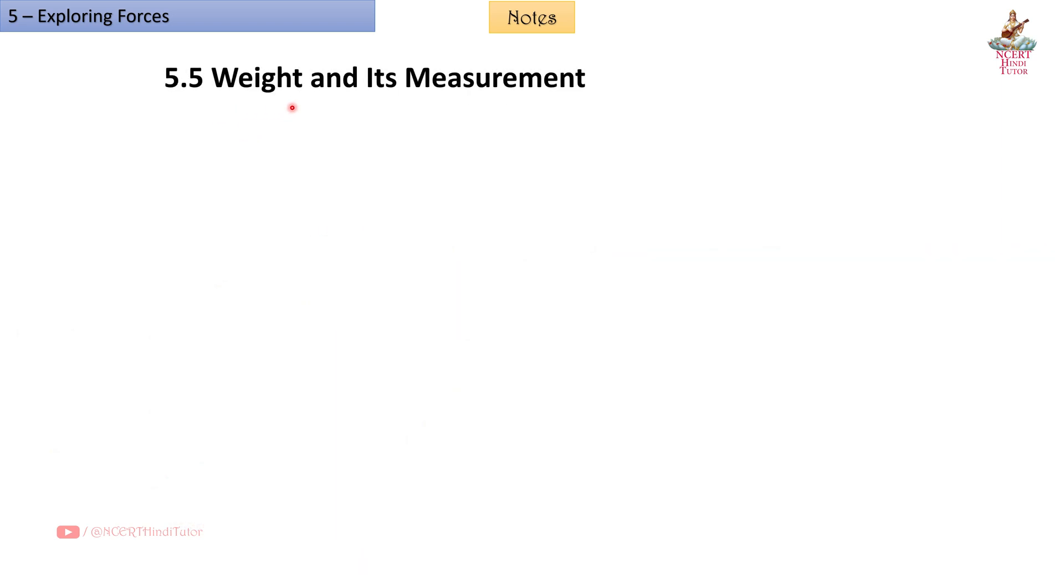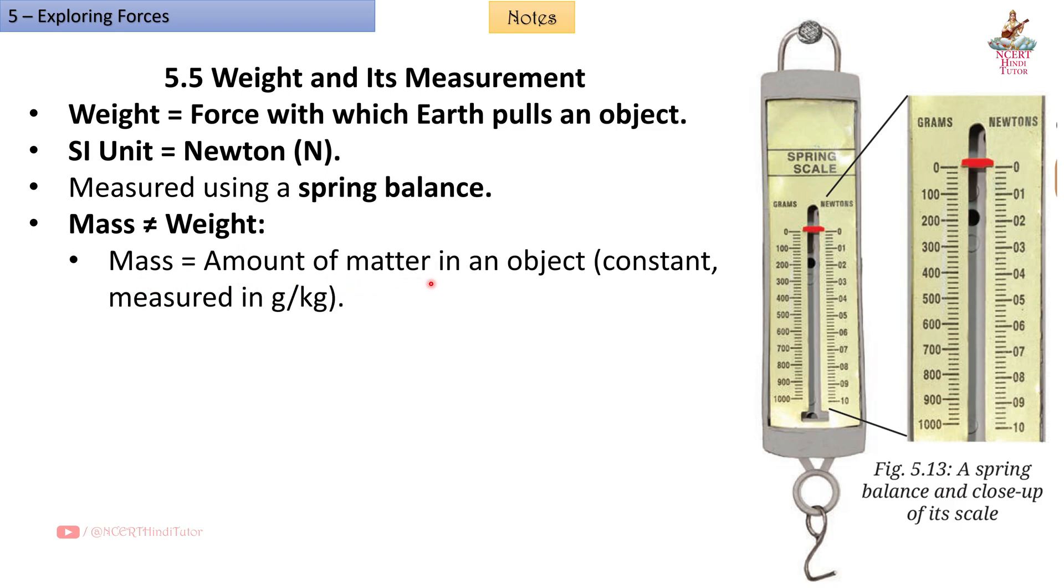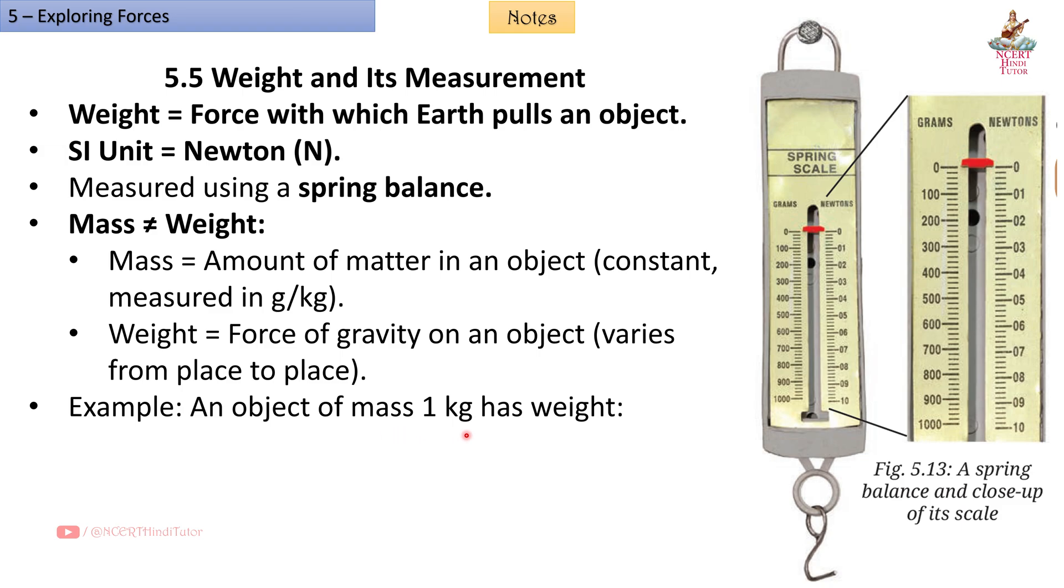5.5 Weight and its measurement. Weight is the force with which earth pulls an object. SI unit is Newton (N). Measured using a spring balance. Mass is not equal to weight. Mass is the amount of matter in an object - constant, measured in grams or kg. Weight is the force of gravity on an object - varies from place to place. Example: an object of mass 1 kg has weight 10 N on earth, 1.6 N on moon, 25.4 N on Jupiter.